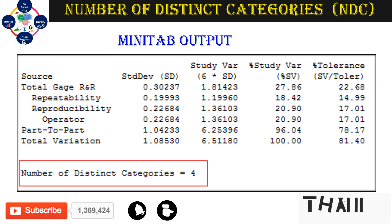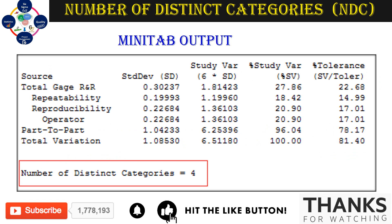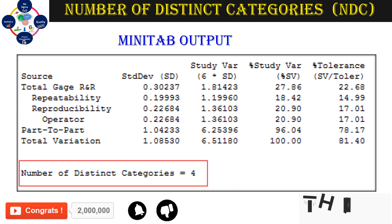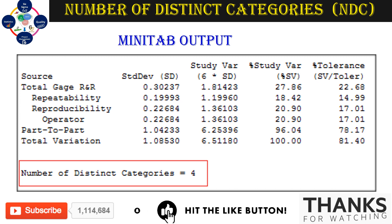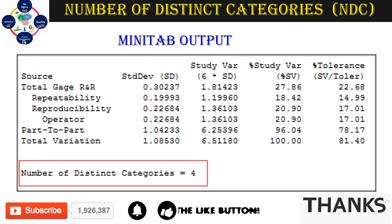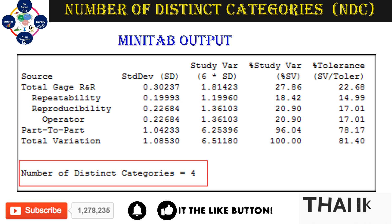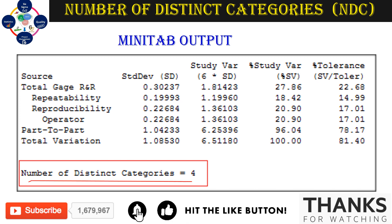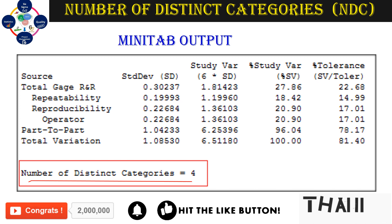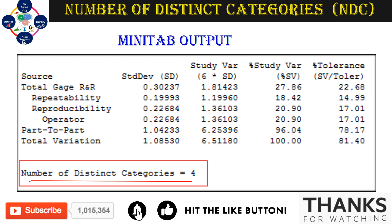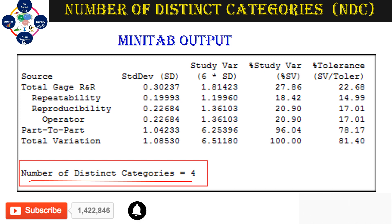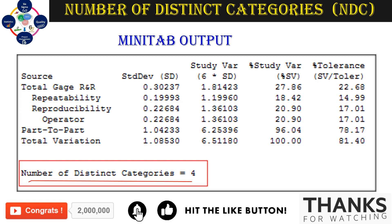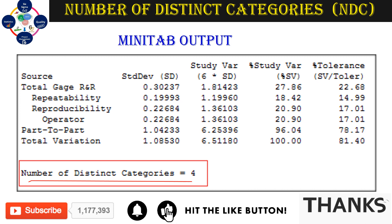When you perform the variable gauge R&R, you get a Minitab output. In the Minitab output report there are many sections, and one of the outputs is in the form of Number of Distinct Categories. This value — for example, four — represents the number of groups your measurement system can distinguish in the data. The higher the number, the better the chance the tool has in distinguishing one part from another.